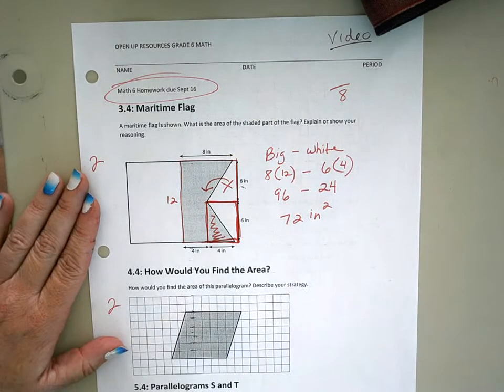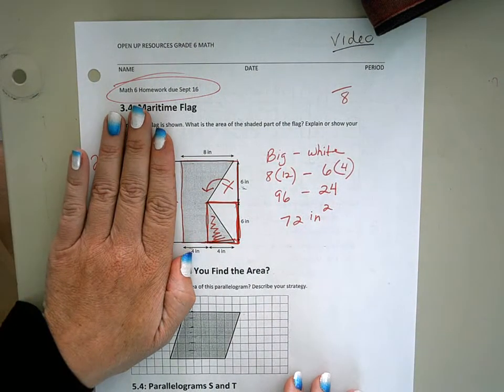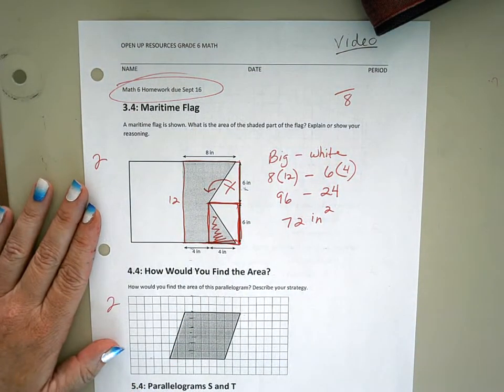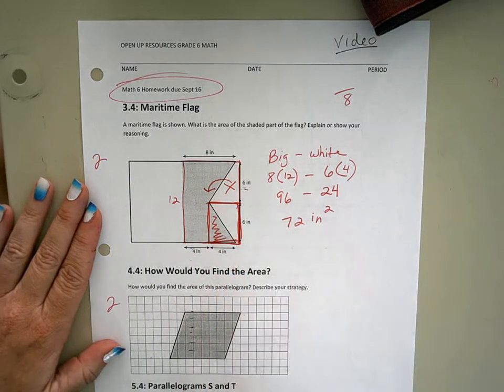We did the whole thing and then we took out the white triangles by making it into its own rectangle and then we subtracted their two areas.